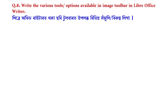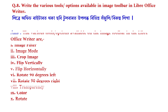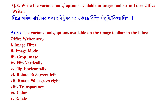The next question is: write the various tools or options available in the image toolbar in LibreOffice Writer. The various tools and options available on the image toolbar in LibreOffice Writer are: image filter, image mode, crop image, flip vertically, flip horizontally, rotate 90 degrees left, rotate 90 degrees right.